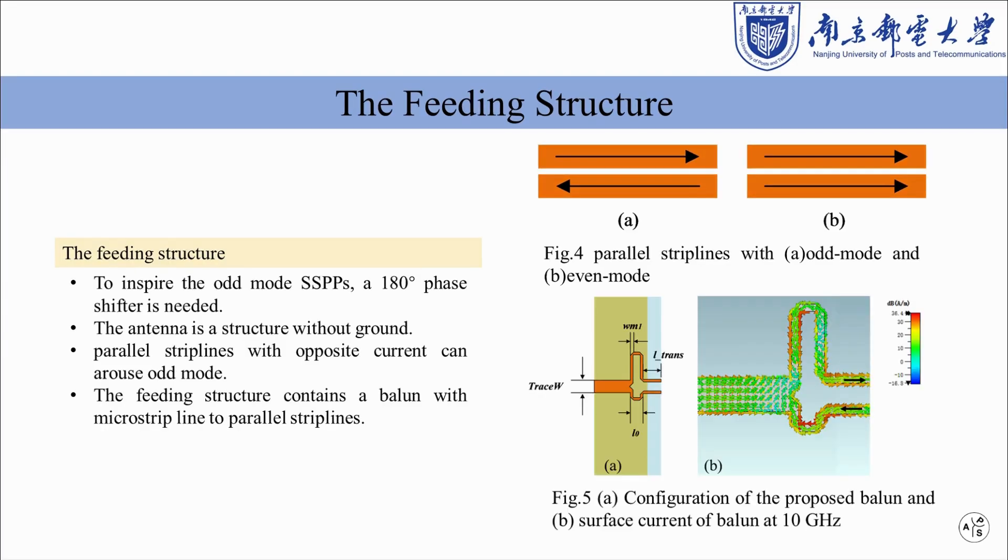As shown in FIG5, we realize a pair of antiphase current by adding a parallel double line behind the traditional balun. By connecting the SSPPs unit mentioned above we can make it operate in odd-mode.